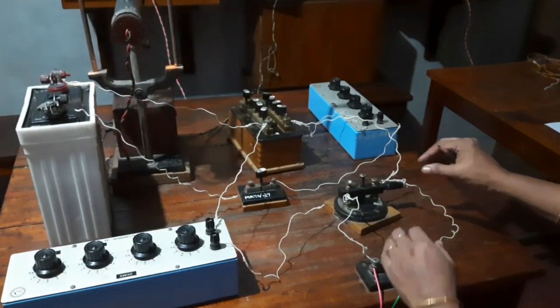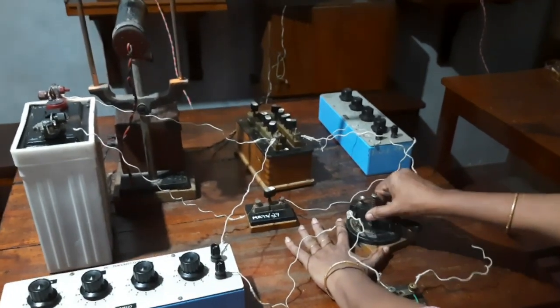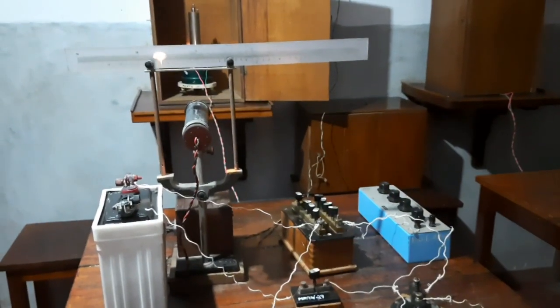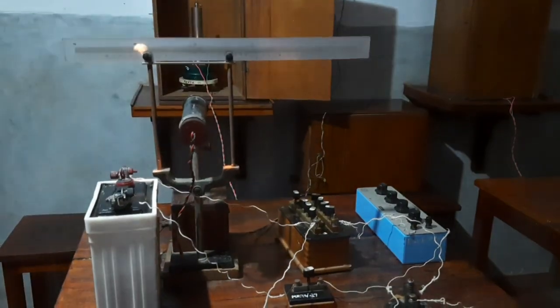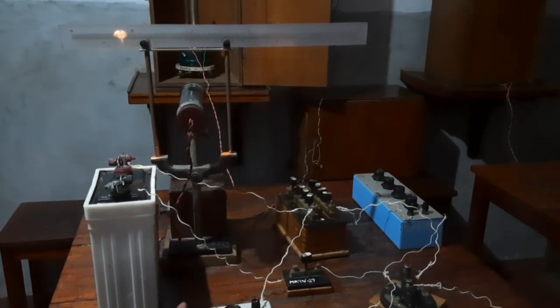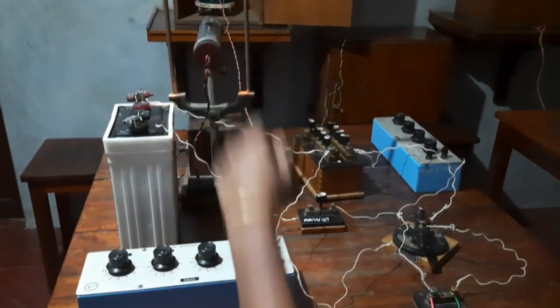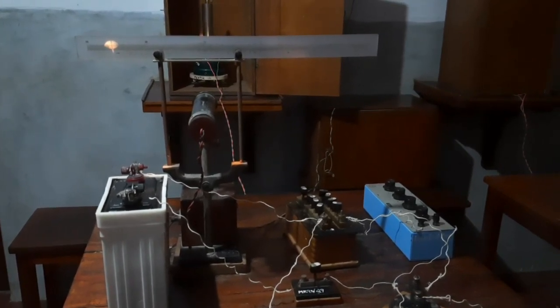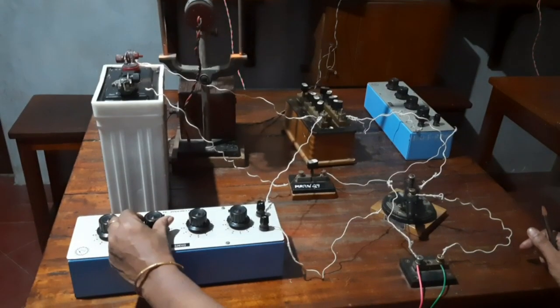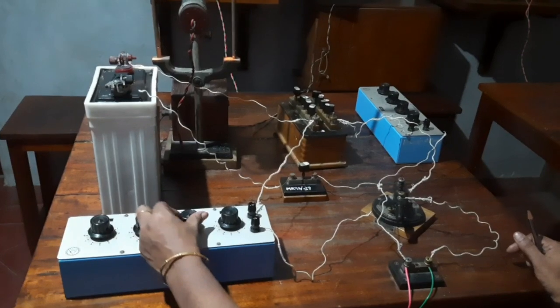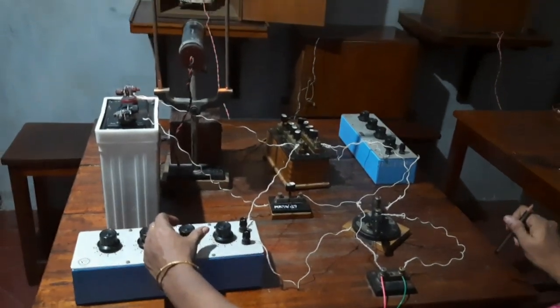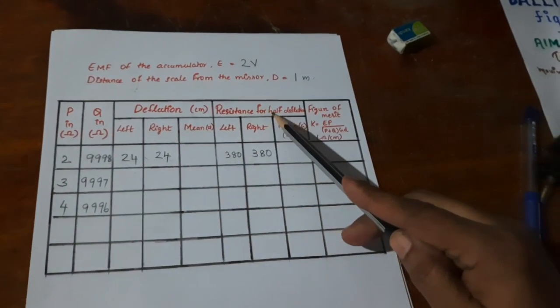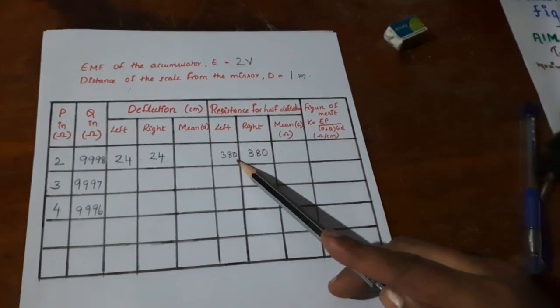We will repeat the experiment by reversing the direction of current onto this BG with the help of this commutator. You can see the deflection goes to the left. Note down the maximum deflection, then try to reduce it to half. You can see that the deflection goes to a maximum of 24, then you reduce it to 12 by introducing the resistance in the resistance box R. The deflection on the left we got it as 24 and resistance that we introduced for half deflection was again 380. You can find the mean of this and calculate your figure of merit.